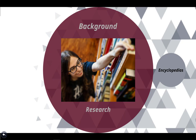Encyclopedias are reference works that give a summary of knowledge and are divided into articles or entries, giving information about subjects or topics. When looking for ideas about how to outline or map a topic, it is often useful to go to an encyclopedia article and see how the article is subdivided and what topics are covered.